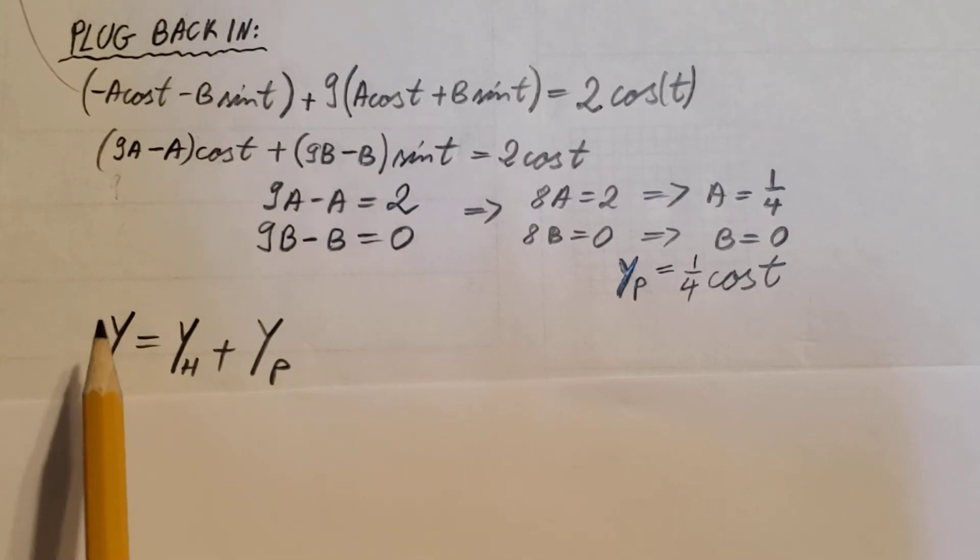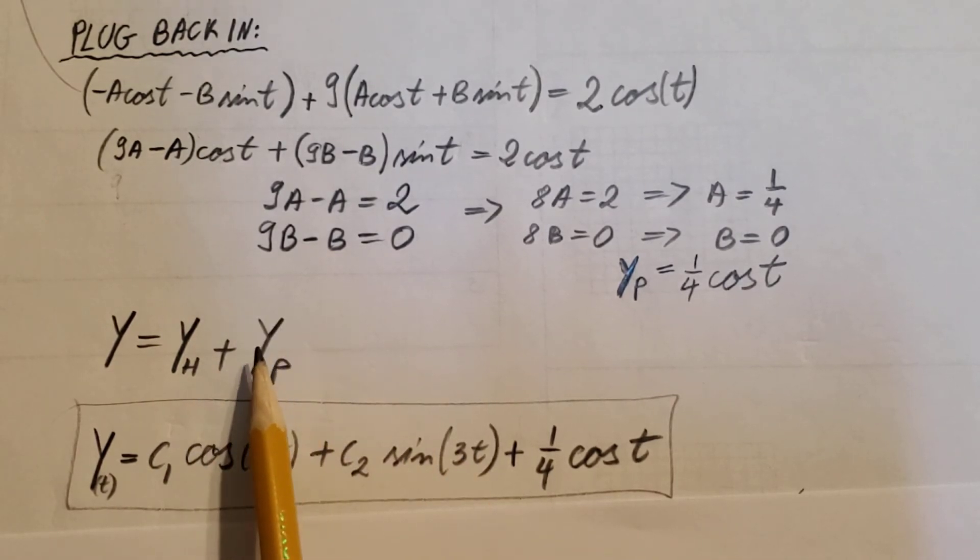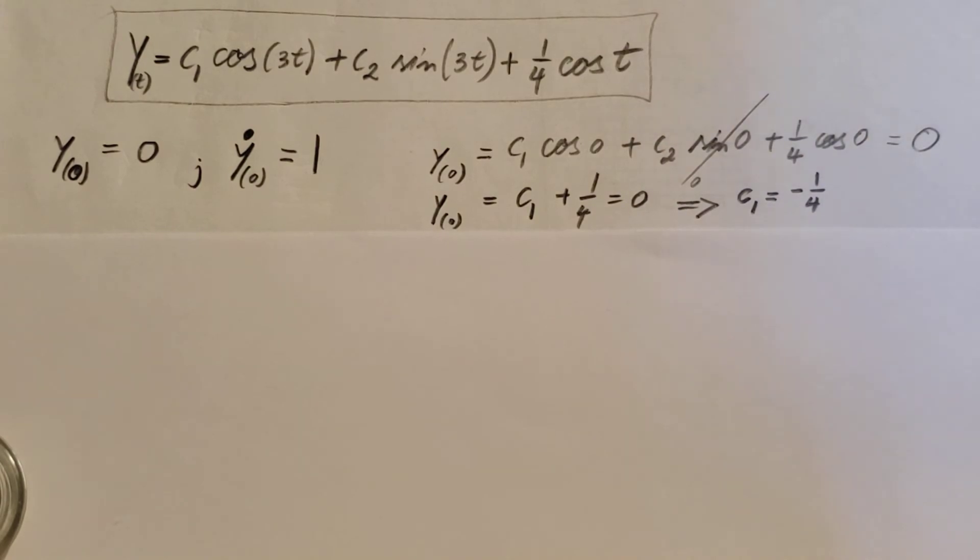Let's write up our final solution, which is y equals yh plus yp. Here we have our yh: c1 cosine 3t plus c2 sine 3t, plus our yp, which is one-fourth cosine t.